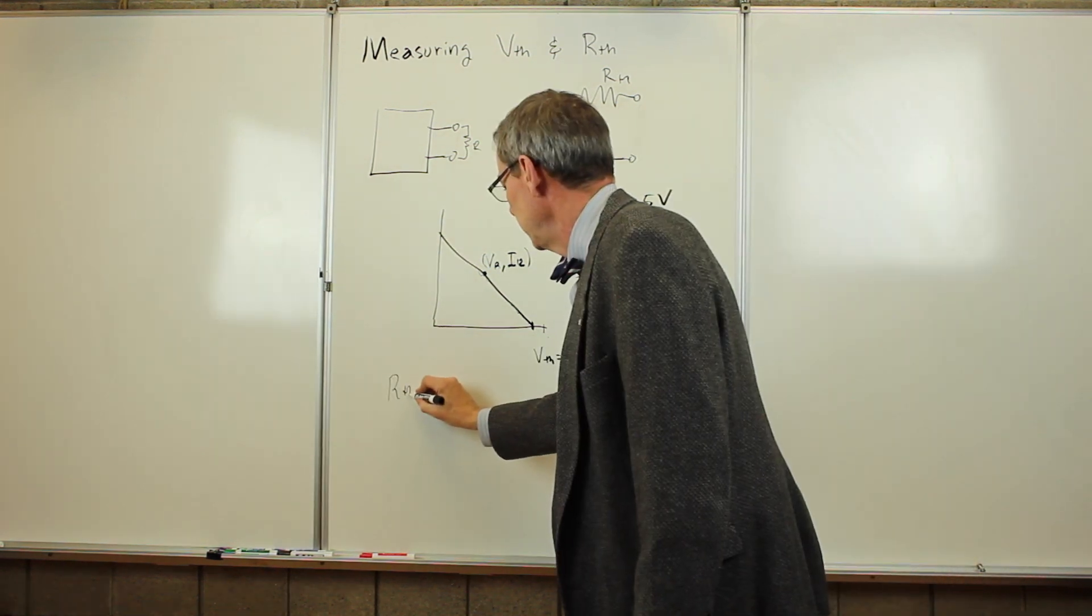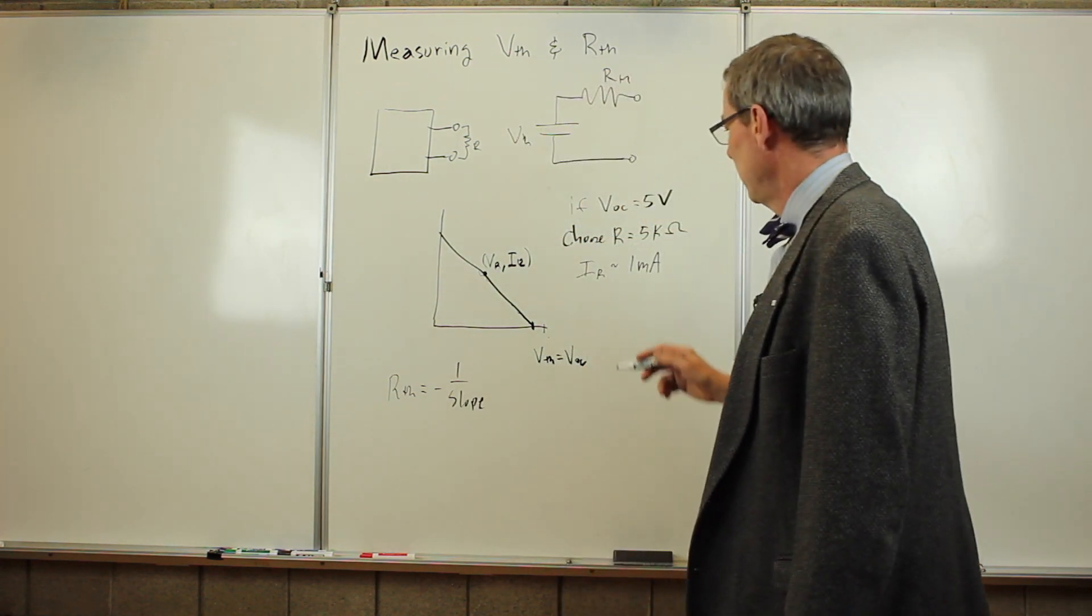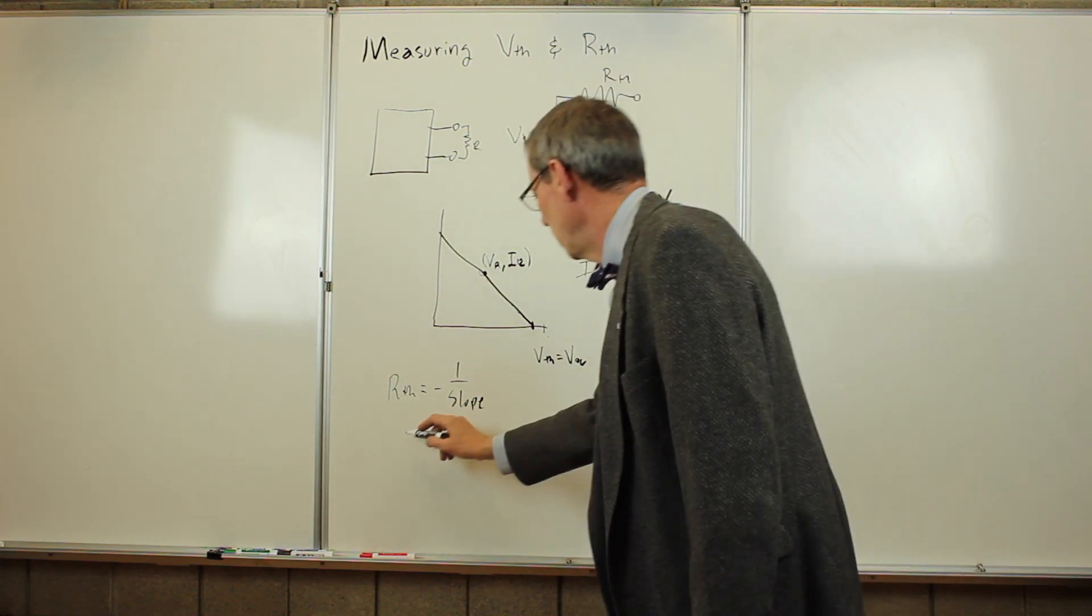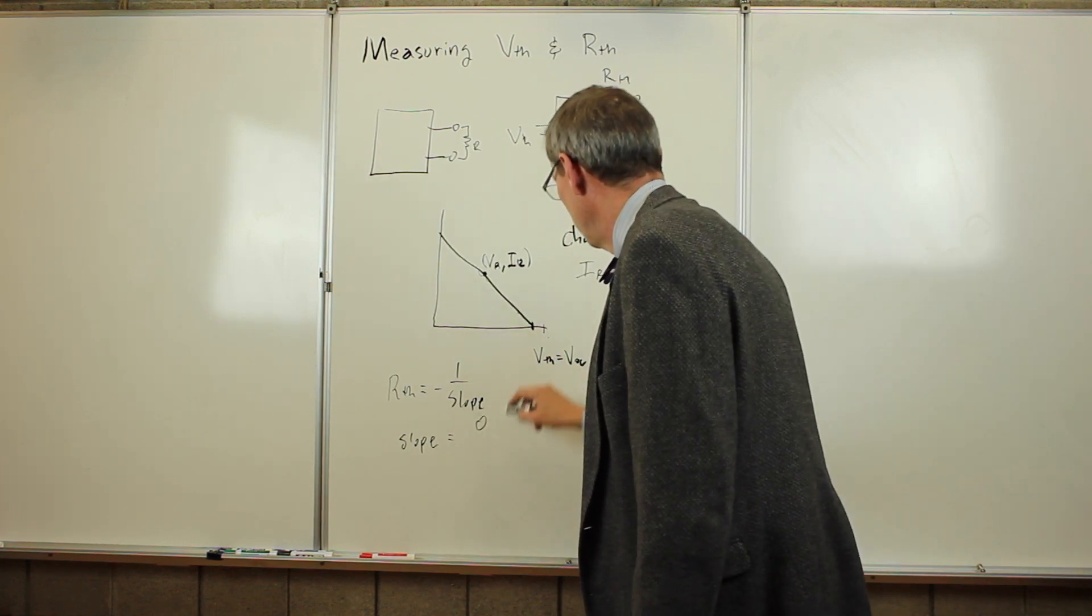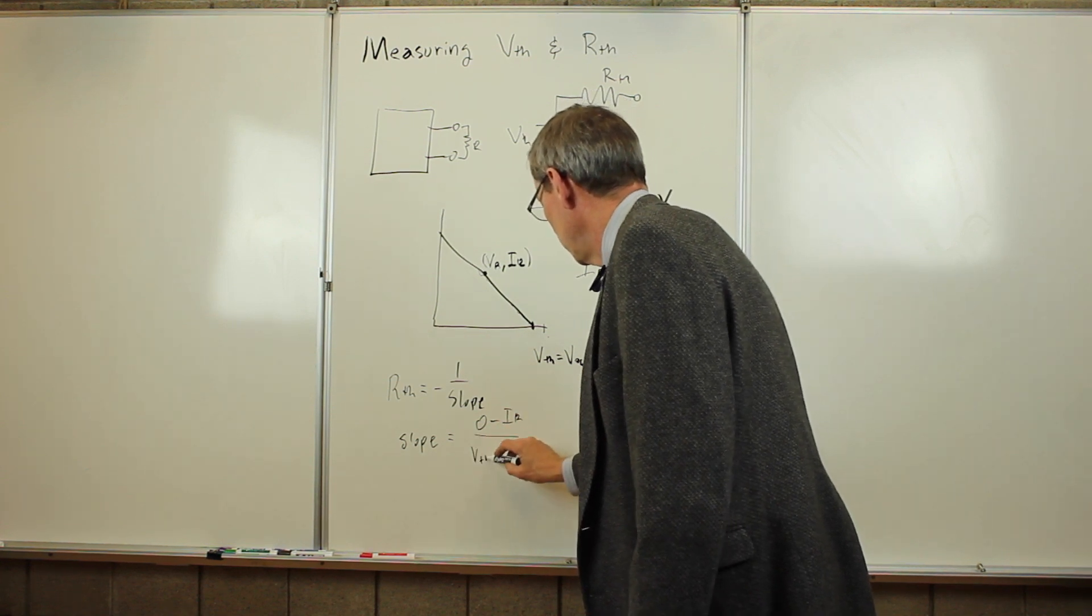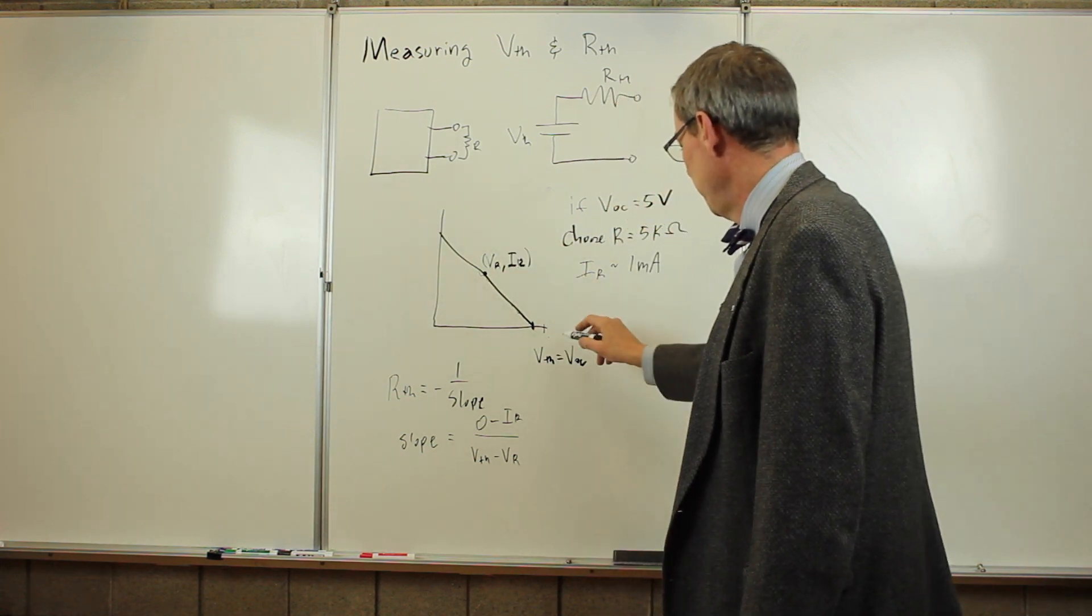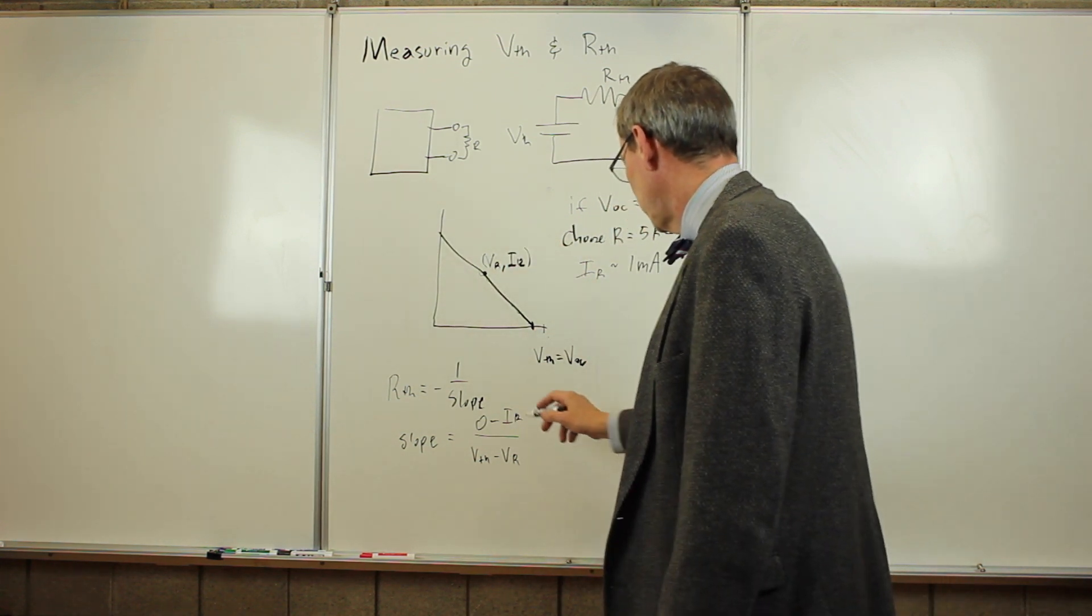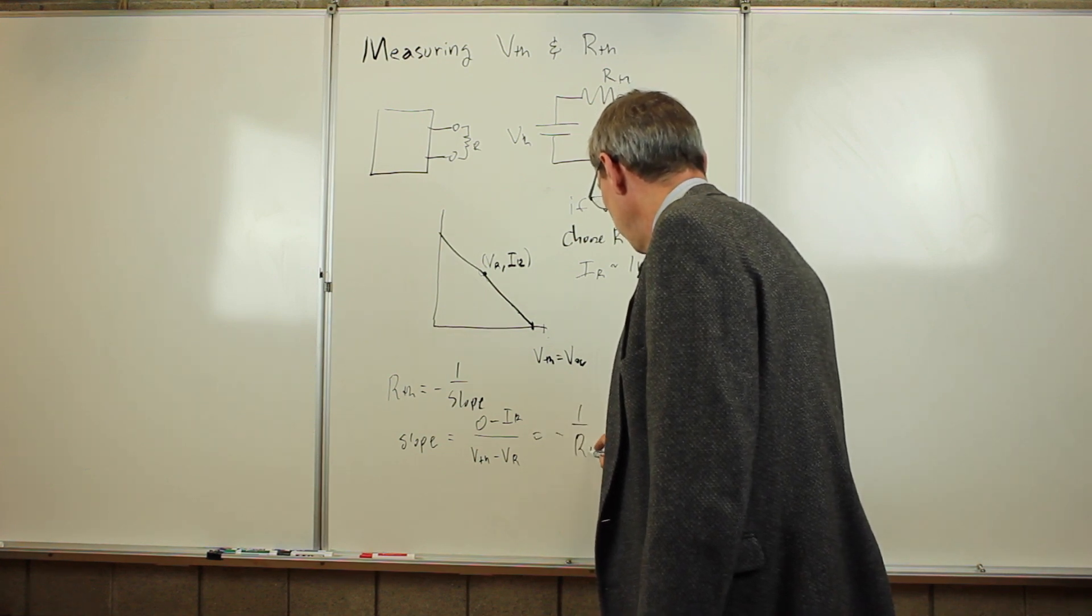Now remember, R Thevenin is minus 1 over the slope of that line. So let's just look at the slope. The slope is the change in the current, so it's 0 minus I_R over V Thevenin minus V_R. So V_R and I_R are what we measured here. And that's going to be minus 1 over R Thevenin.